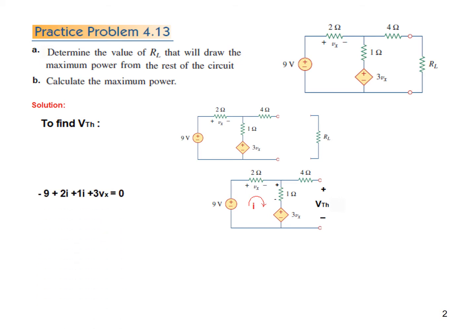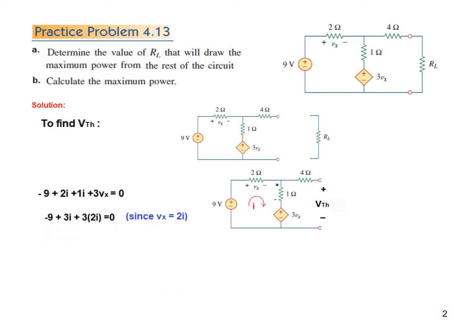Now we write the KVL equation starting from one corner: minus 9 plus 2I plus 2I plus 1I plus 3Vx equals zero. Vx can be seen from the circuit — it is 2 times I, so Vx equals 2I. Substituting and solving, we find I equals 1 ampere.